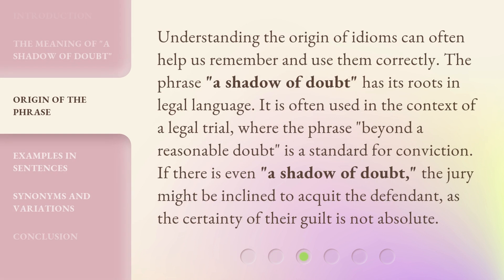Understanding the origin of idioms can often help us remember and use them correctly. The phrase a shadow of doubt has its roots in legal language. It is often used in the context of a legal trial, where the phrase beyond a reasonable doubt is a standard for conviction. If there is even a shadow of doubt, the jury might be inclined to acquit the defendant, as the certainty of their guilt is not absolute.